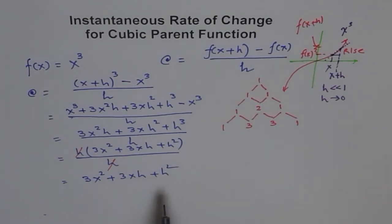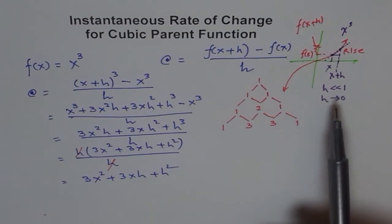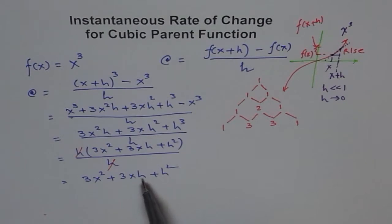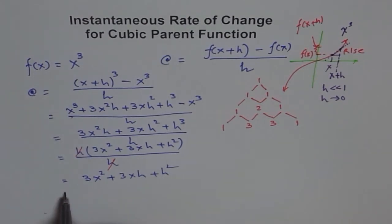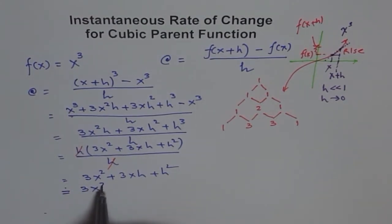In general, what we normally do is assume that h is very, very small. That's not only the assumption, that's what we started with. If h is approaching 0, then both these terms are approaching 0. Therefore, we can write that this equals 3x².